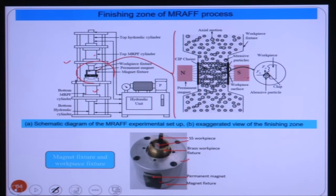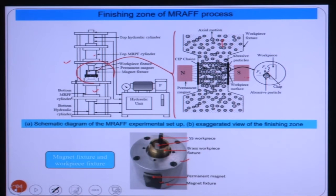In this exaggerated view of the workpiece fixture, the top portion shows the extrusion process connected to the media cylinder. The finishing zone is at the centre where magnetic field is applied, with north and south poles visible. You can see the magnetic lines of force, and carbonyl iron particles forming chains. These chains are not continuous because abrasive particles mixed in break the chain paths. The simulation is considered in the static case; during actual finishing the MR polishing fluid is given reciprocating motion.